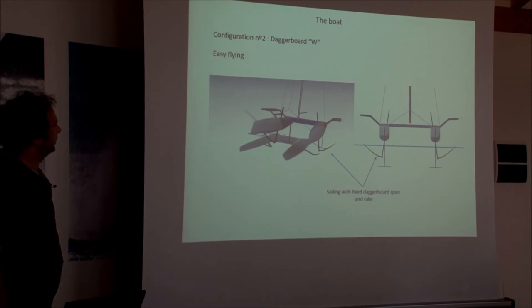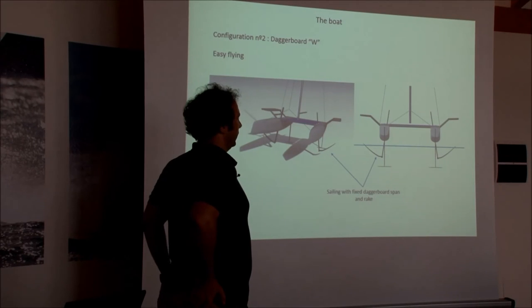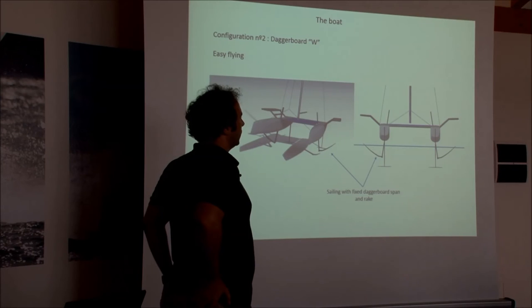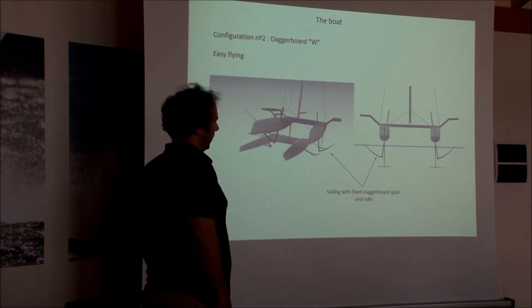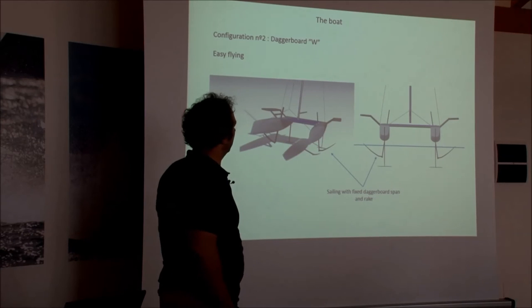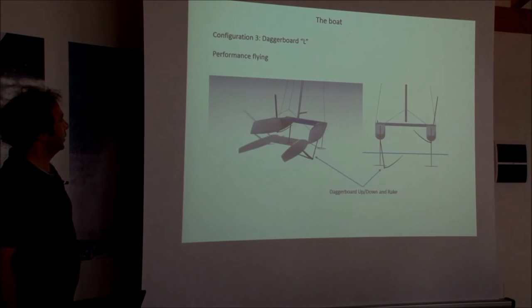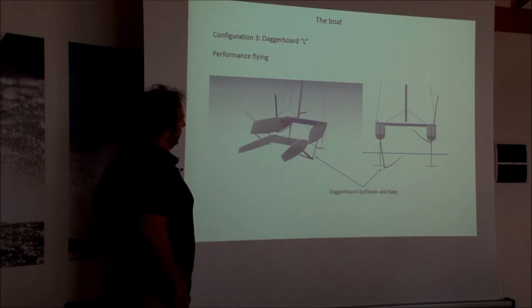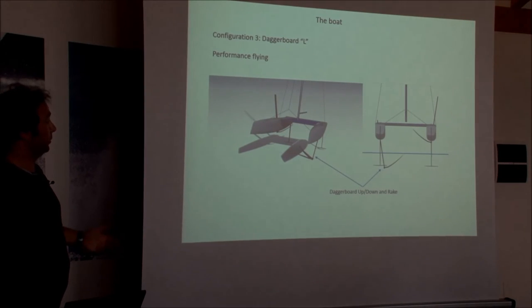We call it Daggerboard configuration. We got the configuration two which is what we call W. The idea is to fly, easy flying. It is a configuration which is a lot more stable. The idea is not to touch the board, not the span, not the rake. The idea is that you use the stability of the tips going up under the water and above the water. For this configuration also we had some wings, like an idea to protect people because you have this foil outside. That is configuration two. We've got the third configuration which is the classical, let's say America's Cup, which is the L foil. When you pass all the steps before you arrive to this one. This one will have up and down and rake system. We call it perform fly.